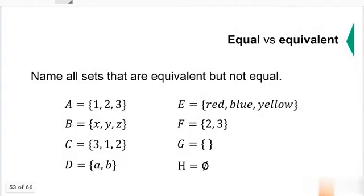Name all sets that are equivalent but not equal. Set E has three elements. XYZ, that's also three elements. So B and E are equivalent but not equal. E and C are also equivalent but not equal. However, A and C are both equal and equivalent sets because they contain the same elements. So they're equal and equivalent.